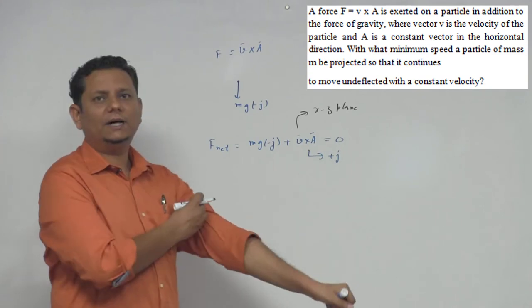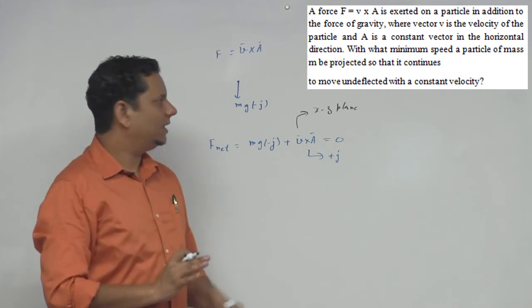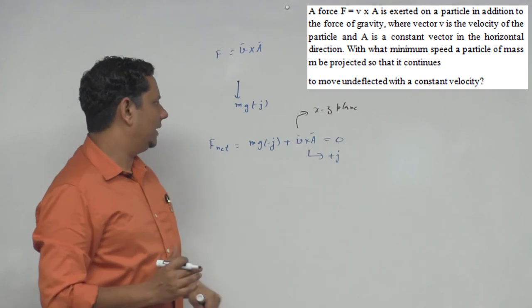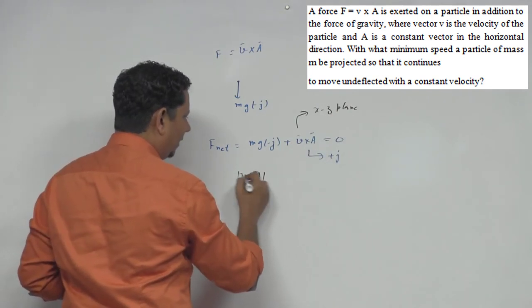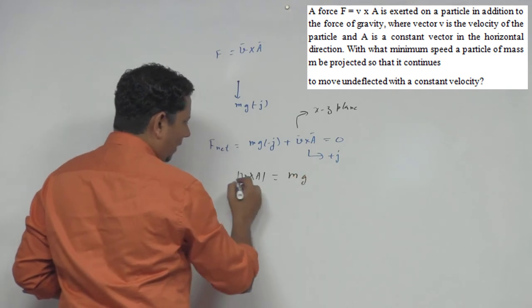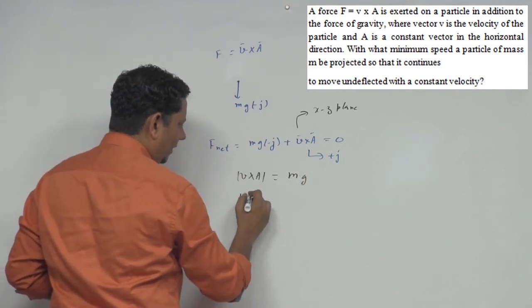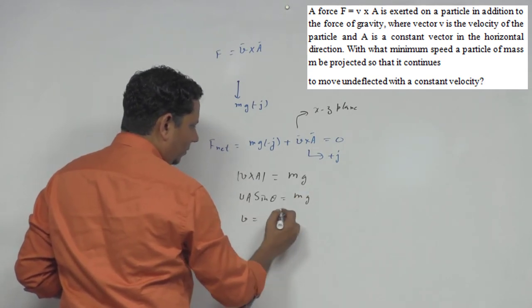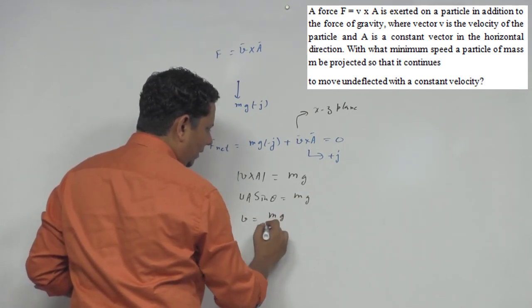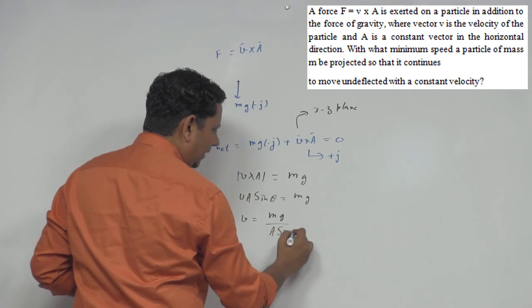Now if we talk about magnitude, VA sin θ will be equal to mg. So V equals mg divided by A sin θ.